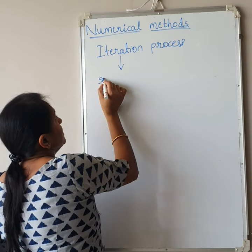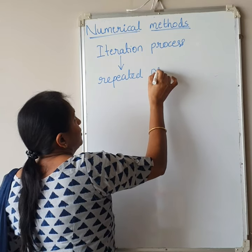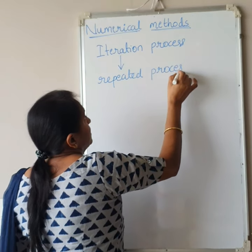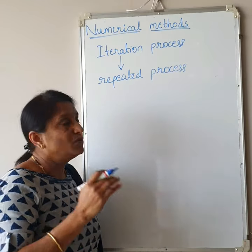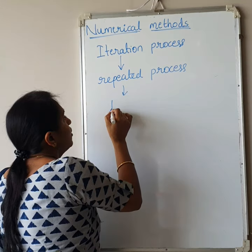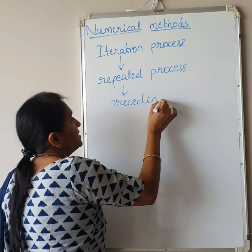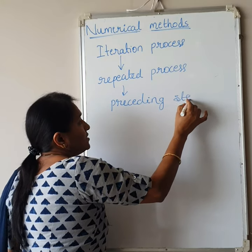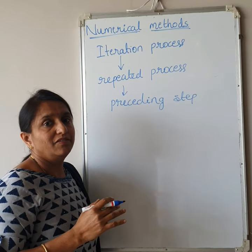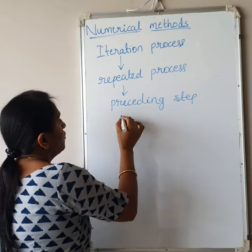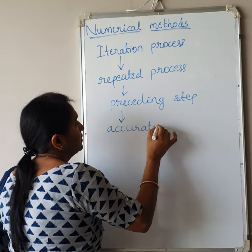In numerical methods, we use what is called the Iterative Iteration Process. Iteration means repeated steps — the same process is repeated in each step. In calculating one step, we use the value of the preceding step. By applying the same process and taking the value of the preceding step, we get the accurate value. This is called numerical method.